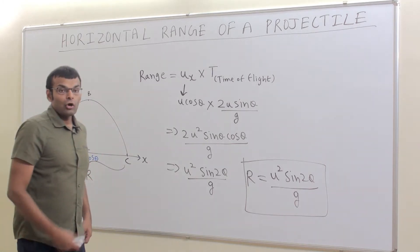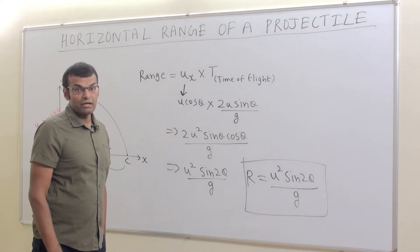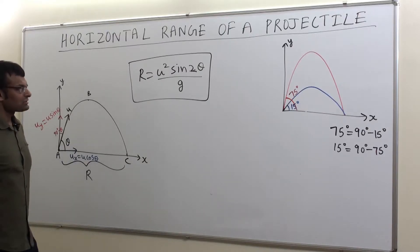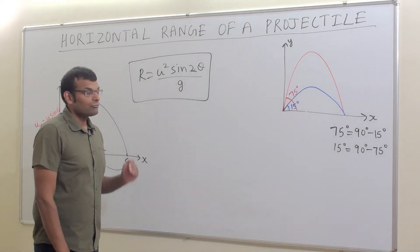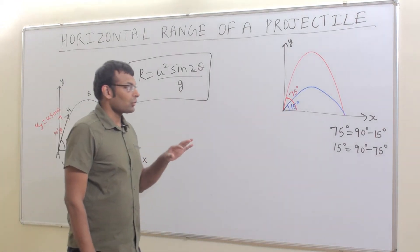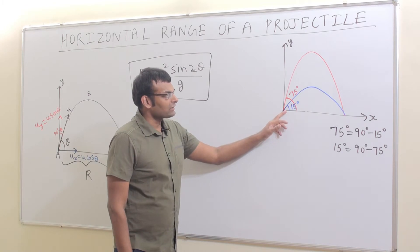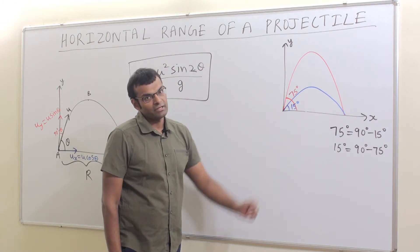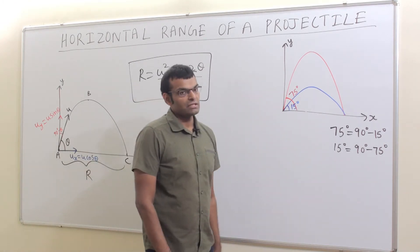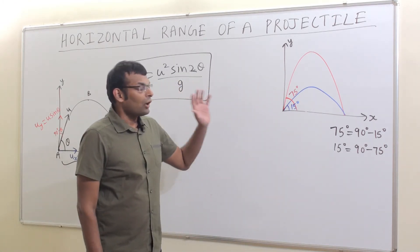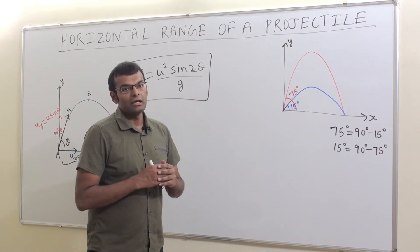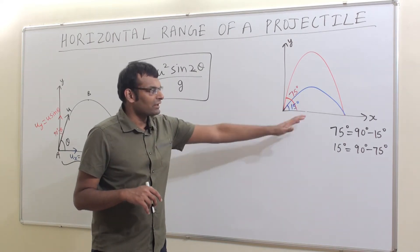Now let us see the complementary angle — how does the range of a projectile behave for complementary angles? Let's discuss the range for an object thrown at complementary angles: theta and 90 minus theta, for example 75° and 15° (since 75 = 90 − 15 and 15 = 90 − 75). You can clearly see the range is almost the same — let us prove it.